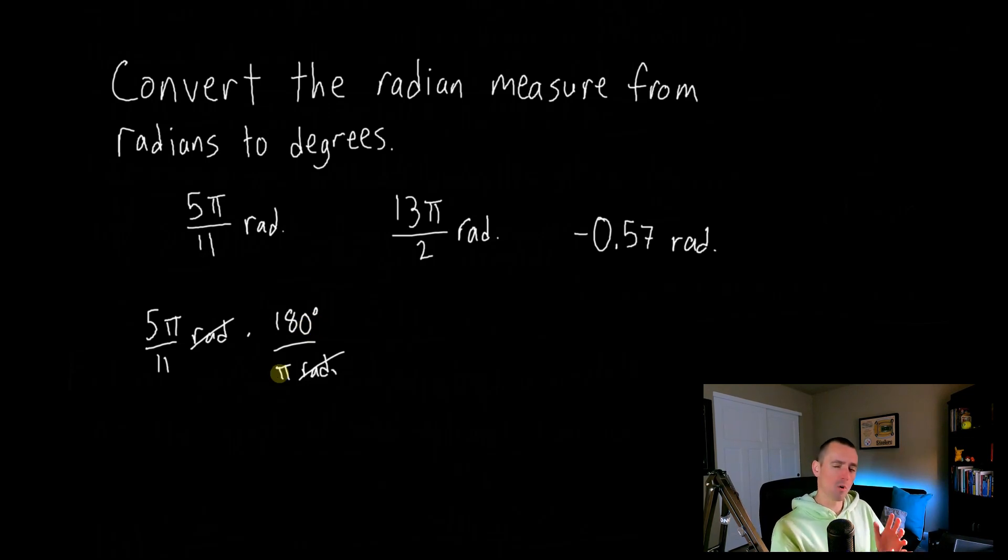Because if you think of this radian as like an actual thing being multiplied here, what you'll notice is having this 5 pi over 11 radians and then dividing by pi radians over here, you could kind of imagine these radians canceling each other out and you're just left with some unit of measurement of degrees. So it kind of forces you into keeping track of what units you are actually converting.